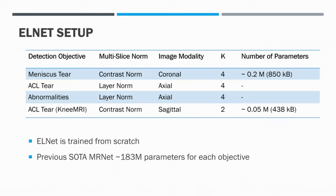For each injury detection objective, we list the configuration in the table above. We train each LNET from scratch and early stopping is applied. The number of parameters for LNET is listed, and in comparison to the 183 million parameters of MRNet, LNET is considerably more lightweight. Although not deeply investigated in our work, we notice the correspondence between the selected image modality and the choice for multi-slice normalization.